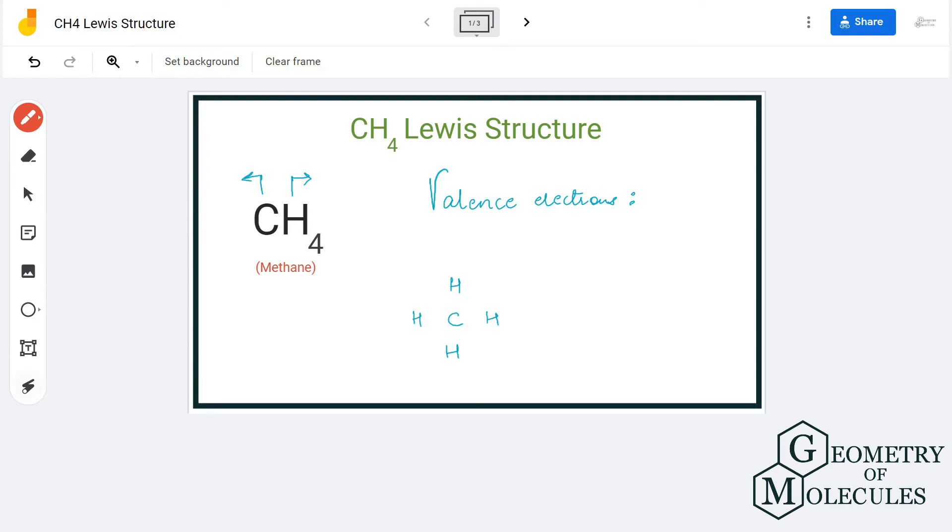Carbon has four valence electrons and each hydrogen atom has one valence electron in its outer shell. In total, we have eight valence electrons for CH4.